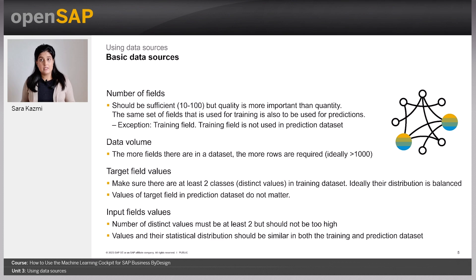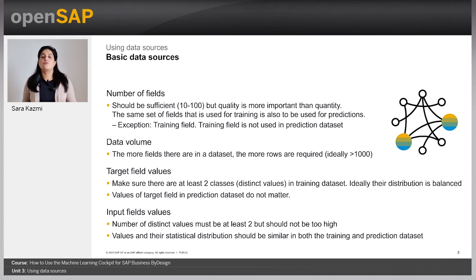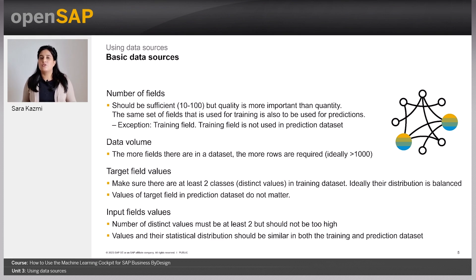Let's discuss what properties of a data source we should pay attention to. First, number of fields: the number of fields should be sufficient, somewhere between 10 to 100, but quality is more important than quantity. The same set of fields used for training is also to be used for predictions, with the exception of the training field, because the training field is the one that is predicted — it is not used directly in making the prediction, so it is not used in the prediction dataset.